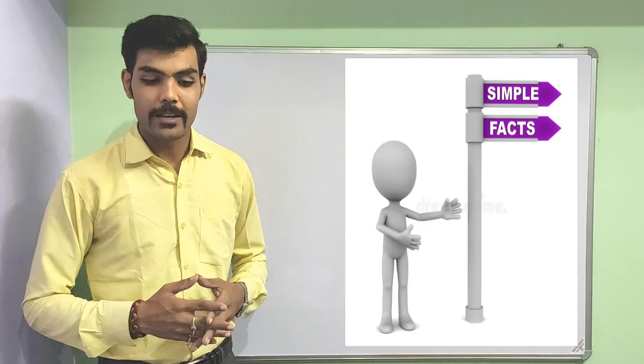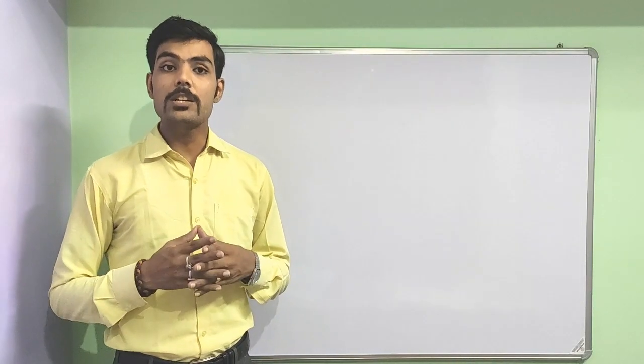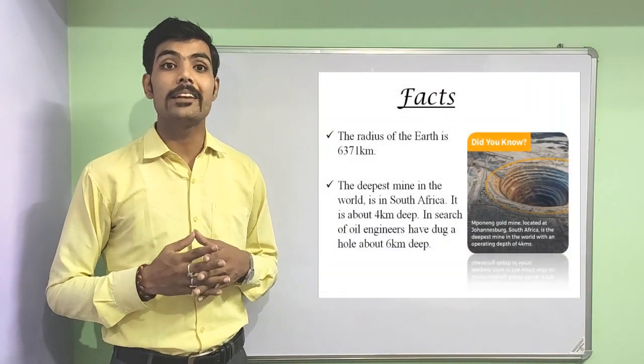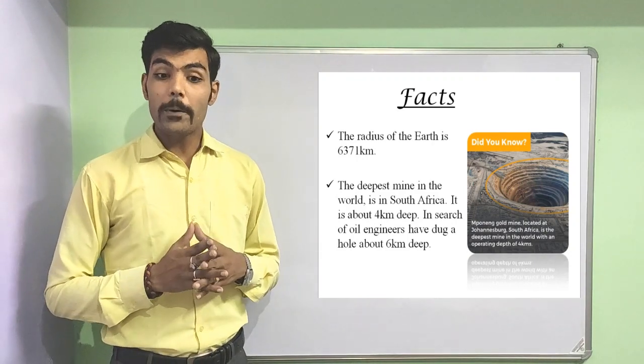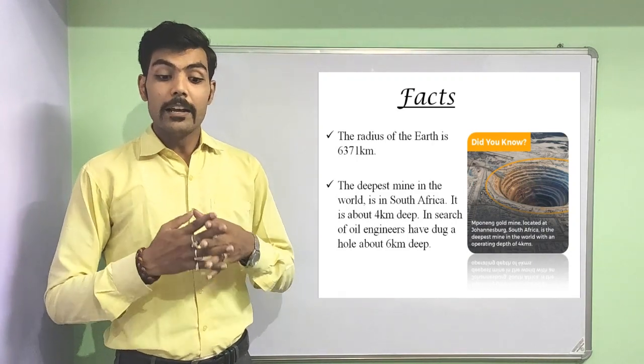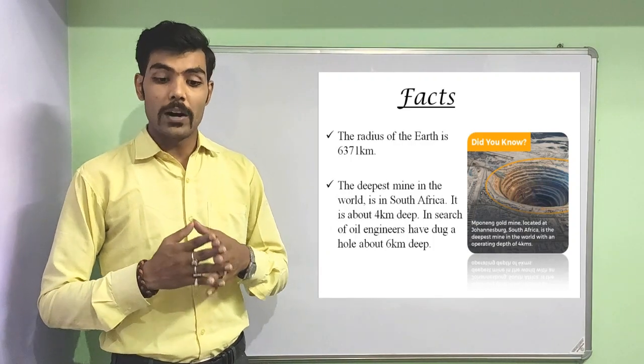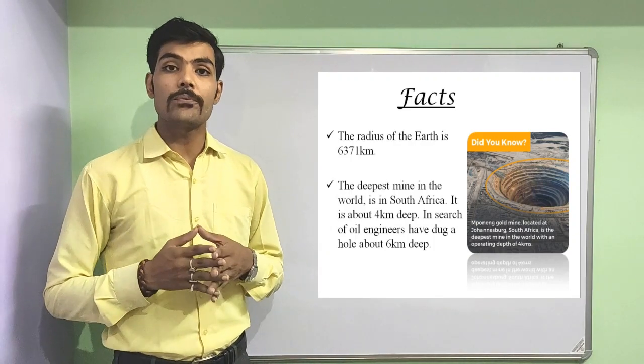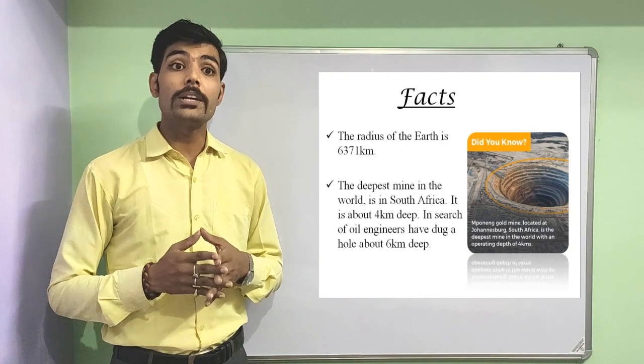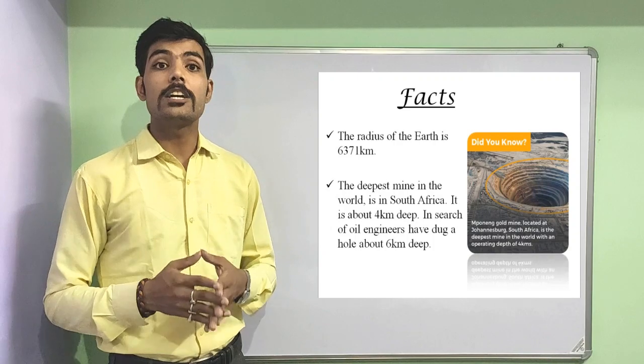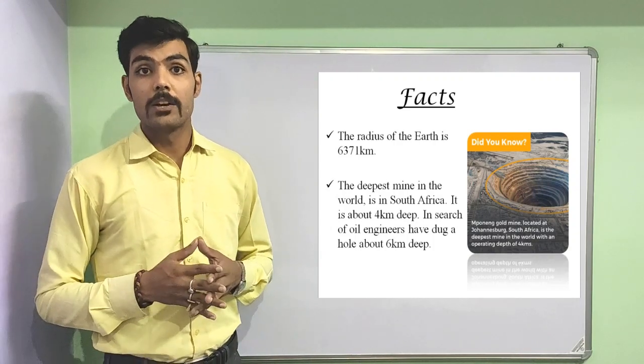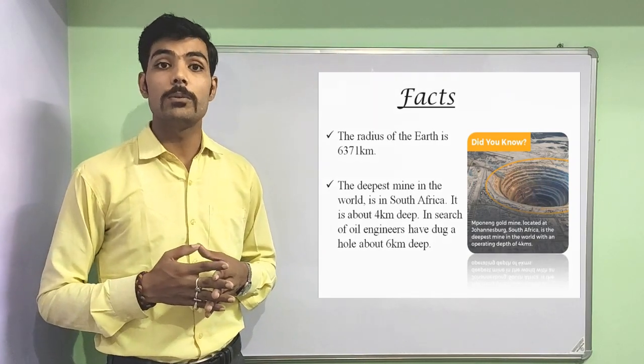Now it's time for fact time. You know the radius of the earth is 6371 km. Second fact, when we talk about the deepest mine, the deepest mine of the world is located in South Africa which is about 4 km deep. And the scientists have dug in search of the oil fields which was almost about 6 km.